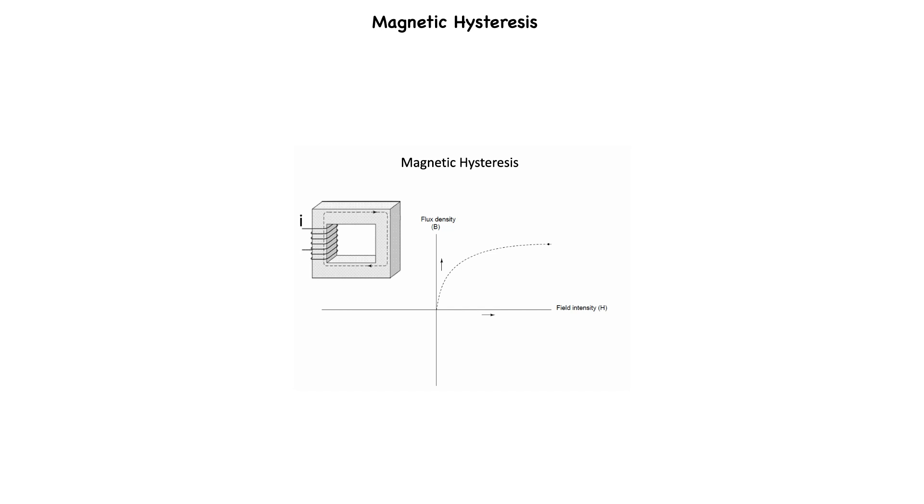Now, we will slowly apply the same amount of magnetic field force in the opposite direction. The flux density has now reached a point equivalent to what it was in the full positive value of field intensity, except it's in the negative direction or in the opposite direction.